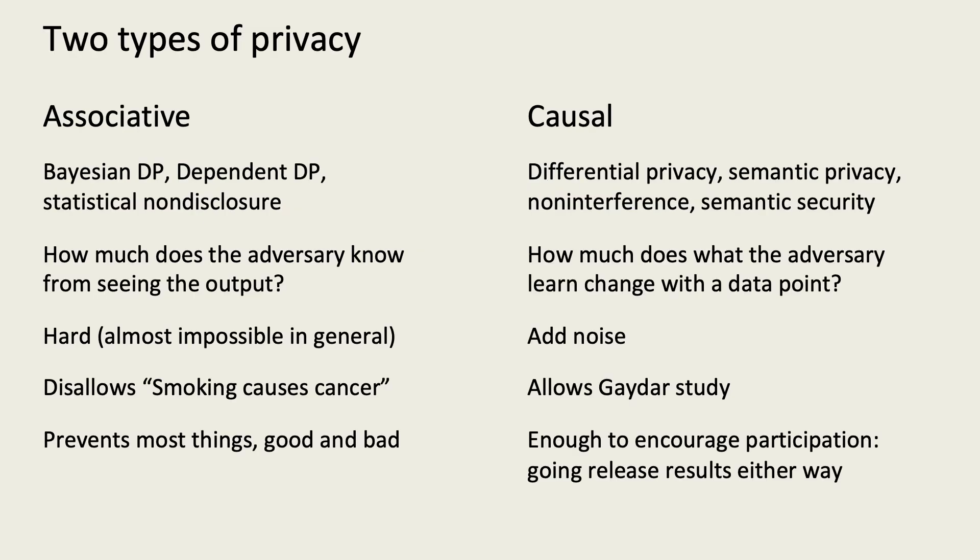While we have explained what differential privacy provides, the question remains as to whether differential privacy, or associative differential privacy, better captures what we mean by privacy. Each has its limitations. While associative definitions bound what an adversary can learn, they are essentially impossible to provide and disallow studies that greatly benefit society.